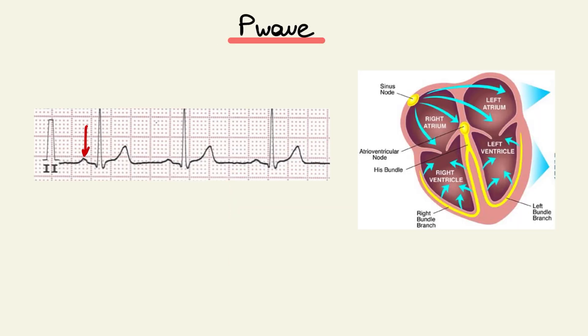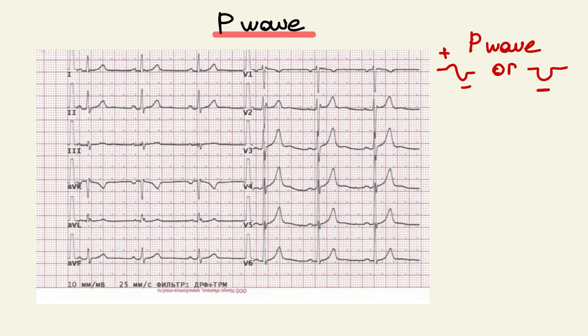The first wave is a P wave. It represents atrial depolarization. In a normal situation P waves form looks like this and it represents depolarization both of atrial right and left. In normal sinus rhythm we can see P wave before QRS complex, positive at lead 2 and negative at lead AVR.